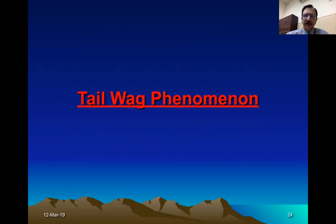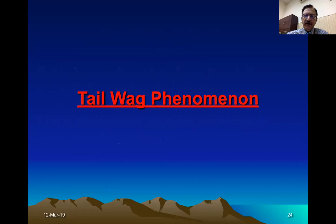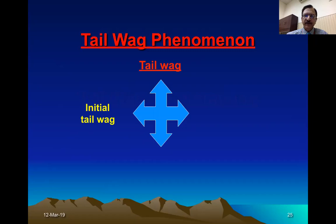Another atypical phenomenon shown by a bullet is the tail wag, where the tail becomes unstable and wags. This phenomenon is of three types: initial tail wag, where the bullet becomes unstable when it leaves the barrel; intermediate tail wag, where the bullet becomes unstable while traveling through a medium due to negative forces; and when passing through another medium such as water or glass.